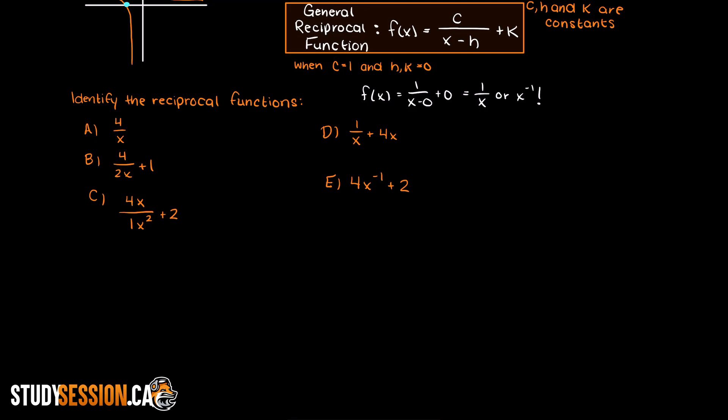So for each example let's write down the general reciprocal equation formula as that will help us accept or reject each option as a reciprocal function. In example a we have a valid reciprocal function as setting a to 4 and h and k to 0 we have the same function. Similarly, for example b we have a reciprocal function.